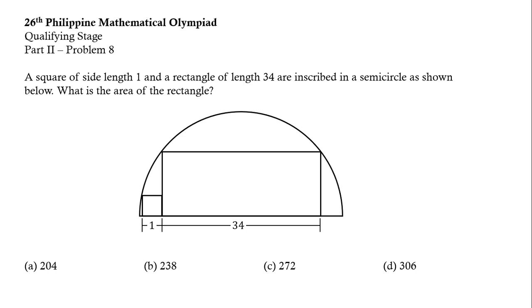Let us solve another problem from the 26th Philippine Math Olympiad qualifying stage. A square of side length 1 and a rectangle of length 34 are inscribed in a semicircle as shown below. What is the area of the rectangle?